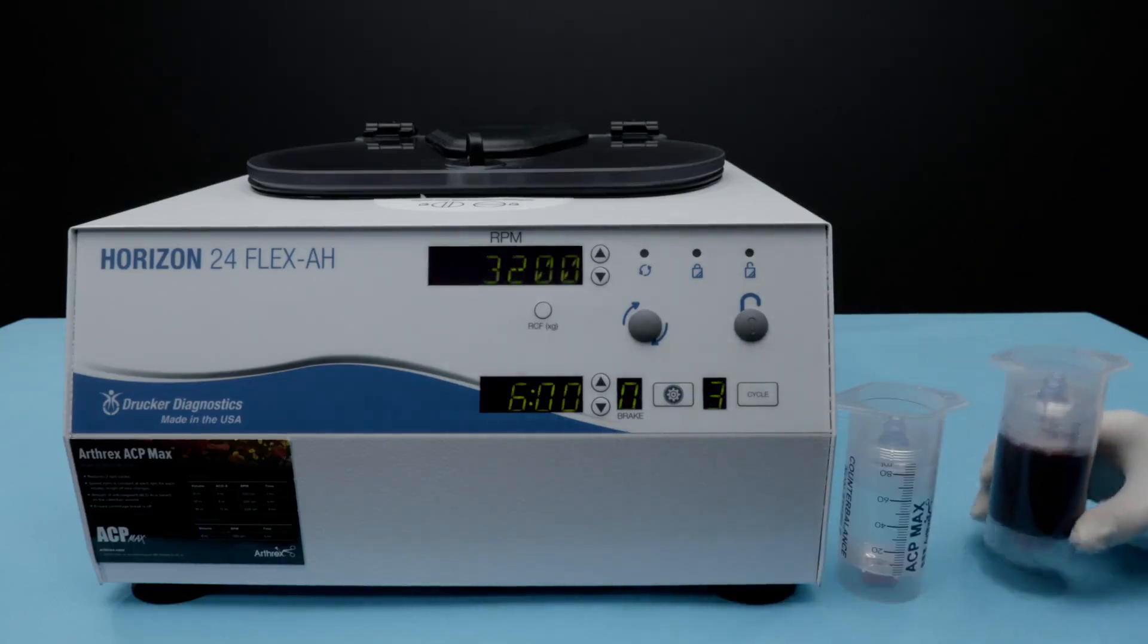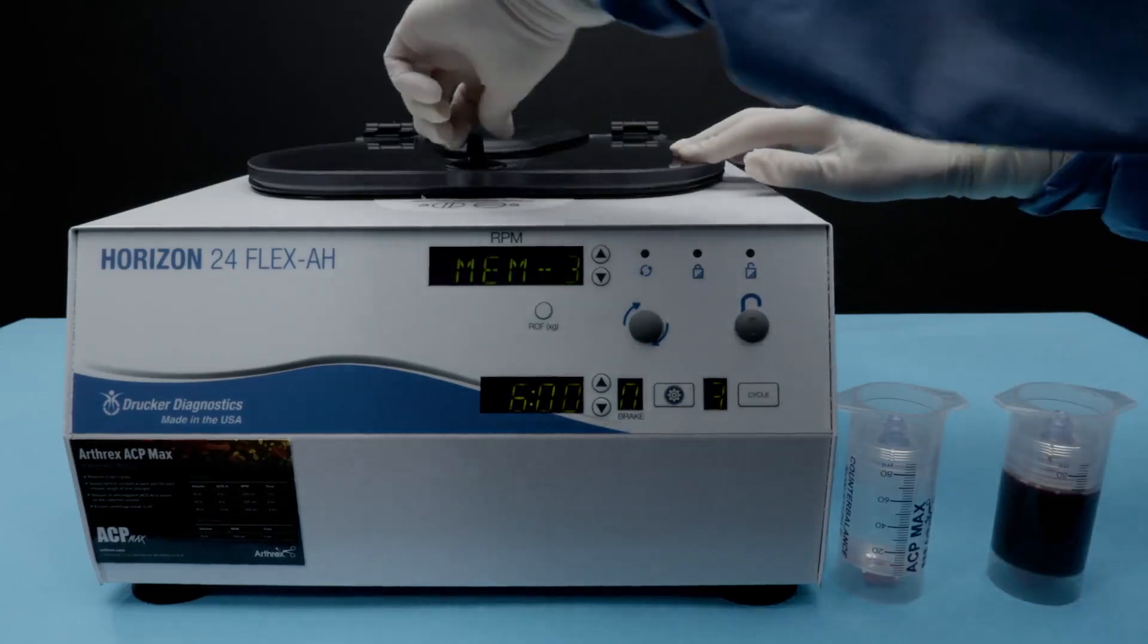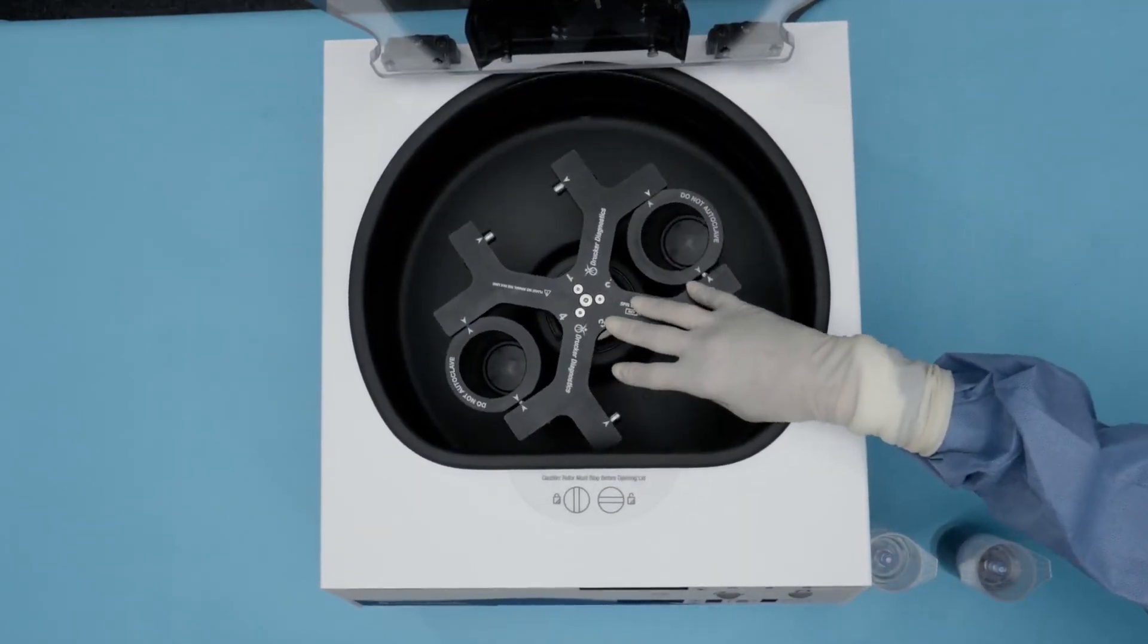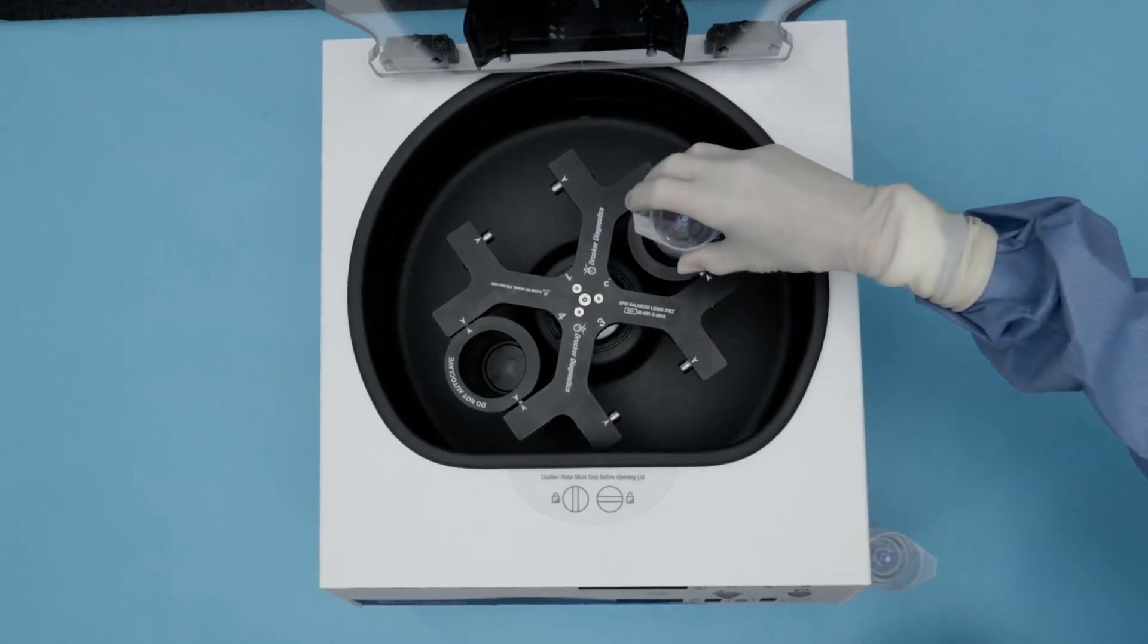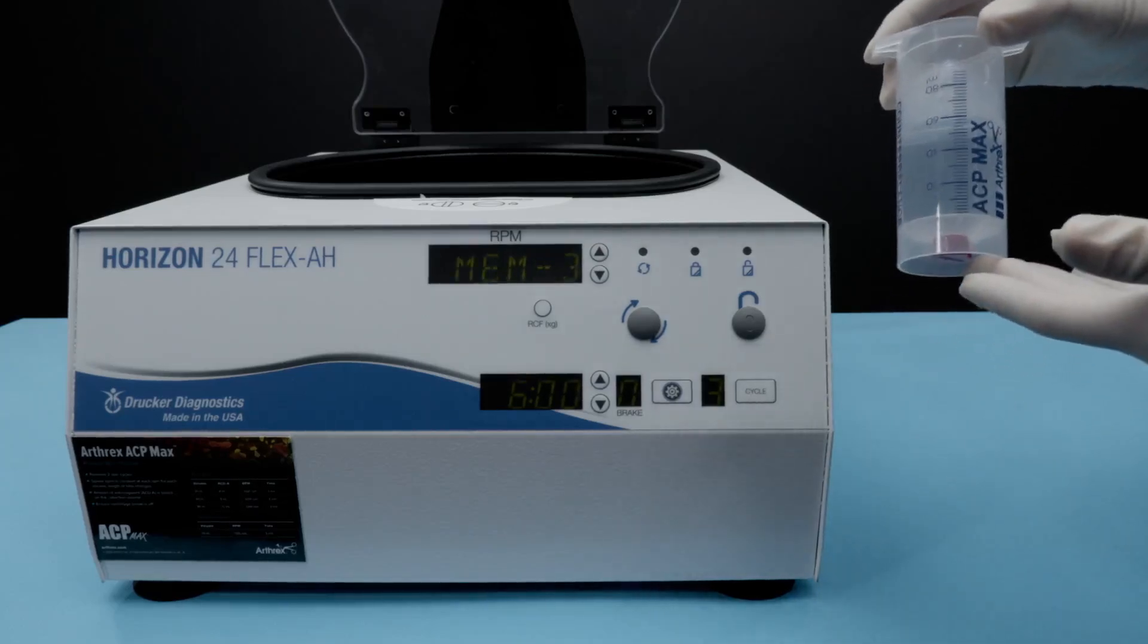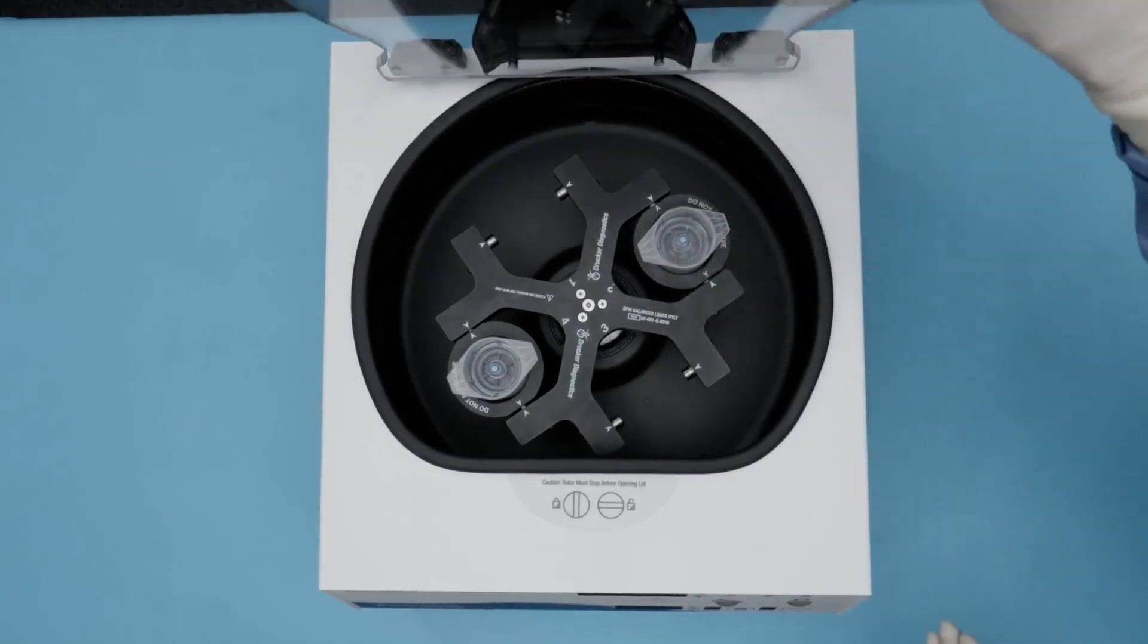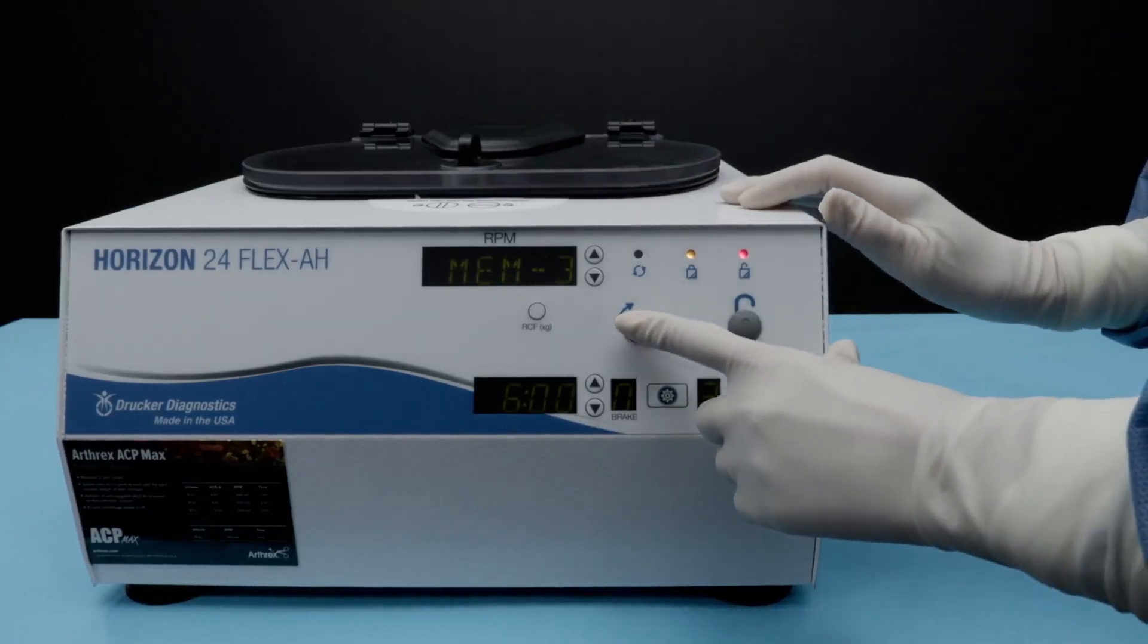For this demonstration, we are using 60 cc's of peripheral blood. We're going to open our centrifuge, unlock the centrifuge, then unlock the top of the centrifuge. There are two buckets contralateral to each other in the centrifuge. In one, you will place your ACP Max product for the first spin. In the other, you will place an equivalent volume on the other side of the centrifuge to counterbalance your ACP Max product. You then close the lid, lock the lid, and then you can start your first spin.